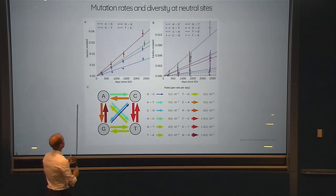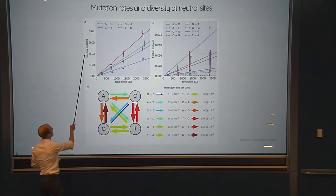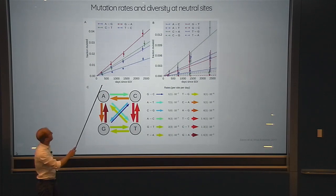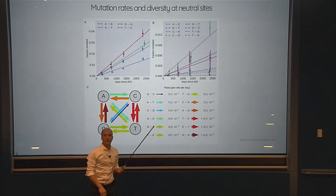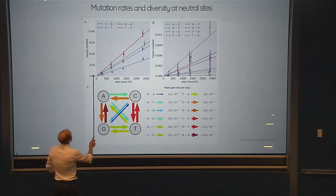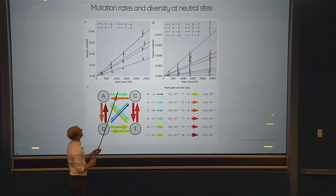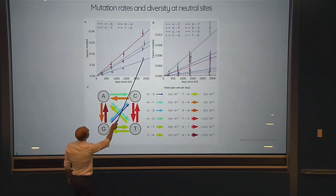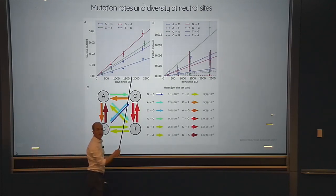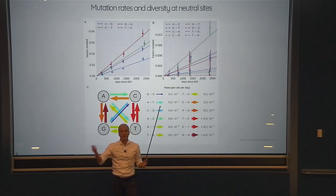The genetic code is redundant — there are 64 codons for only 20 amino acids — so many sites can be mutated without changing the viral proteins. At those synonymous sites, mutations accumulate, and the fraction of mutated reads grows rather linearly with time since infection. The slope is quite different depending on the type of mutation: A-to-G mutations accumulate much more slowly than G-to-A mutations, and C-to-G and C-to-T are even slower.